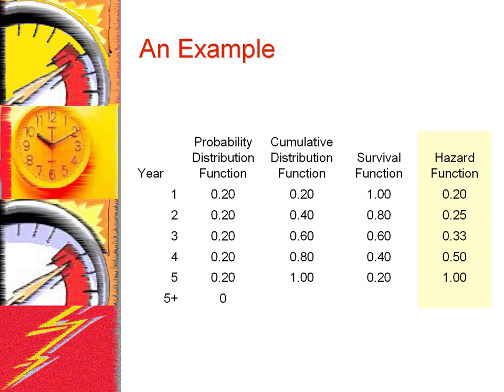So now we can answer the question asked earlier: what is the probability of failure in year 3 if the hip replacement has been successful in years 1 and 2? The probability is 33%, significantly higher than the unconditional probability of failing in year 3, which is calculated to be 20%.